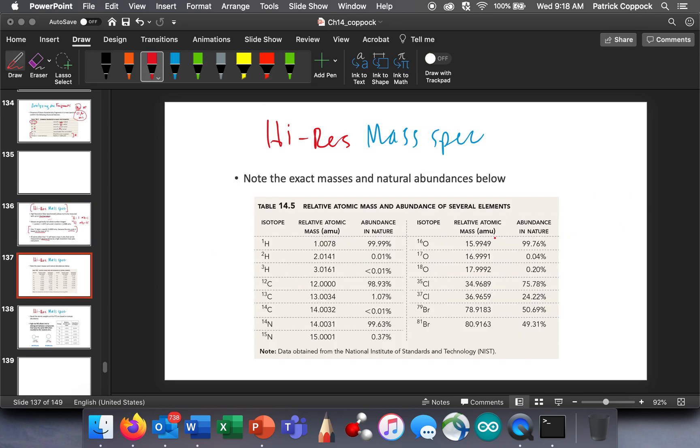So let's look at what some of those masses are going to be. Well, we know in nature hydrogen shows up 99.99% as hydrogen 1, and the mass of that is 1.0078. Hydrogen 2, which we call deuterium, is a very small percentage in nature. It's vanishingly small. We usually don't see it in regular mass spec. But it shows up, it's got a mass of 2.0141. Tritium, which shows up in nature, but it's less than 0.01% because it's not stable. It has a mass of 3.0161.